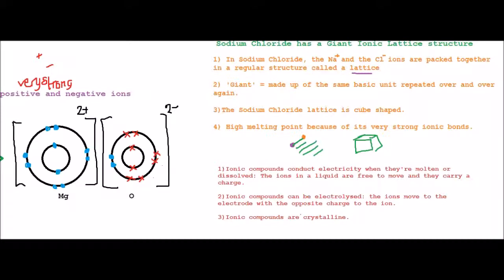And the third point to point out is that ionic compounds are crystalline. Crystalline just means that the atoms or ions are arranged regularly in structures with sharp edges. And that's basically all you need to know about ionic bonding for now. I'll see you again soon!